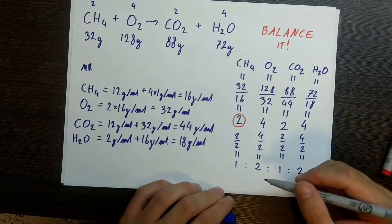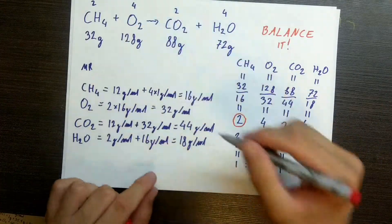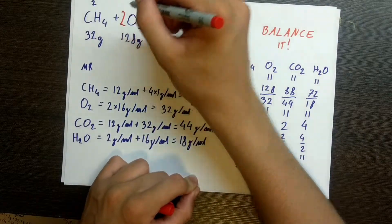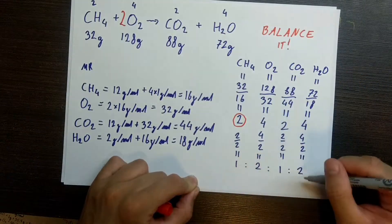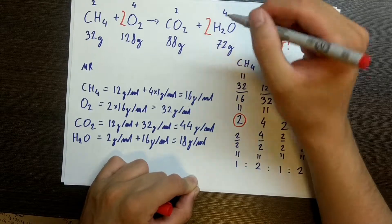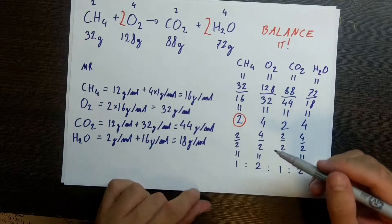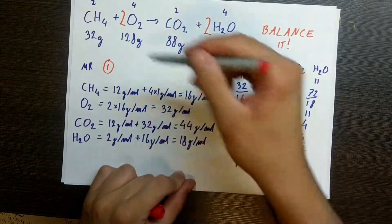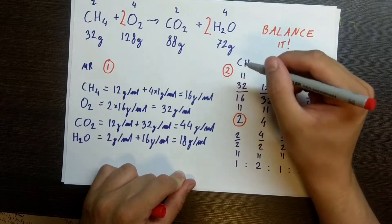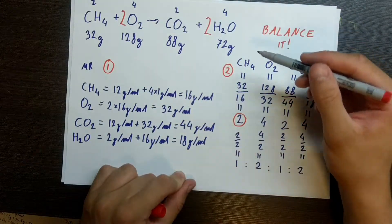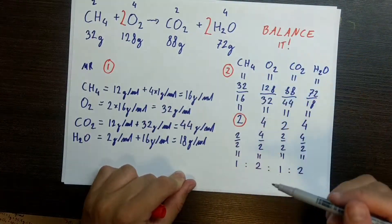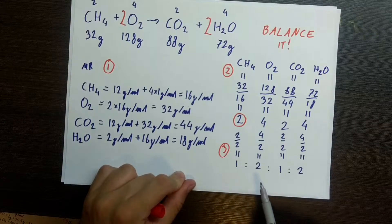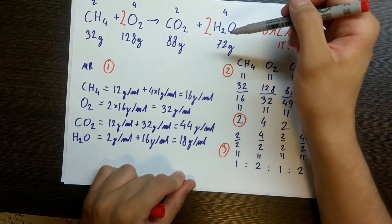So let's plug this in. We have 1 CH₄, 2 O₂, 1 CO₂, and 2 H₂O. So the balanced equation is CH₄ + 2O₂ → CO₂ + 2H₂O. That's our answer. The steps were: figure out molecular weights, figure out how many moles of each player, and then find the simplest ratios to plug into the equation.